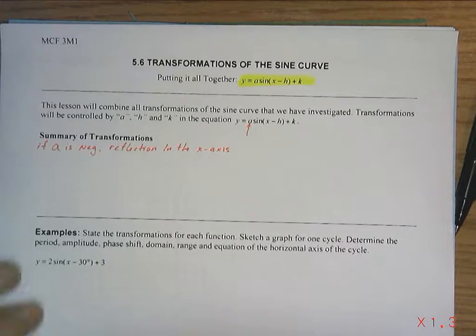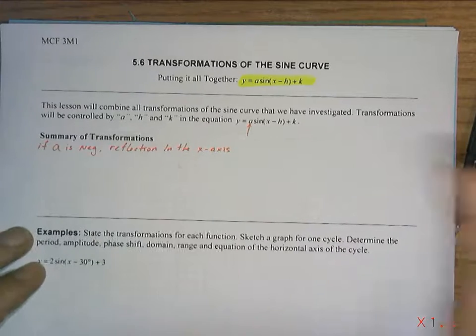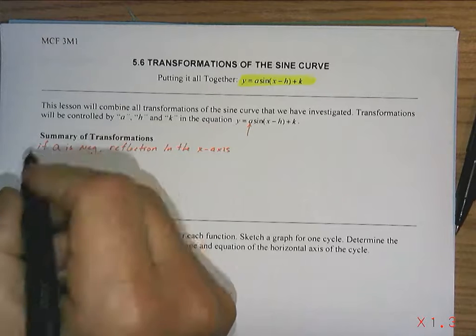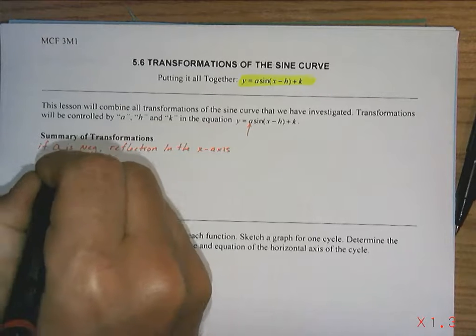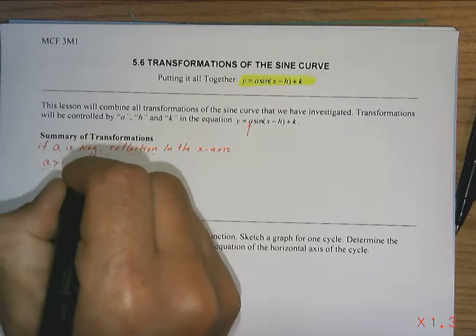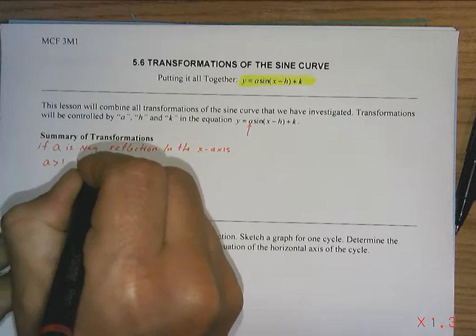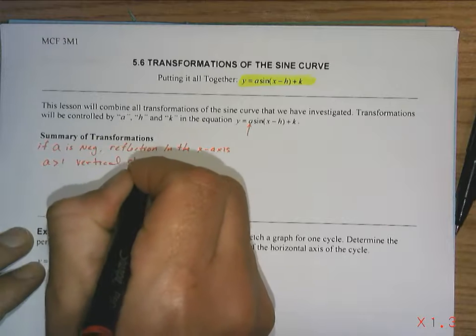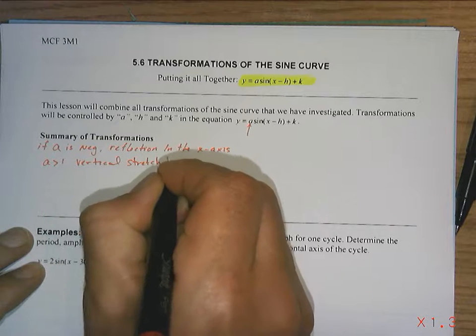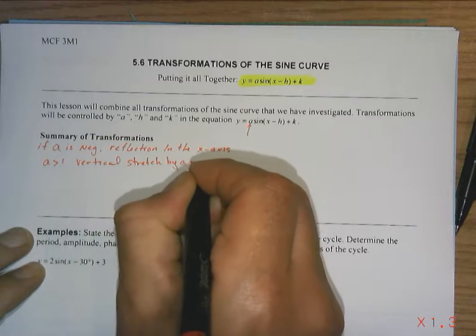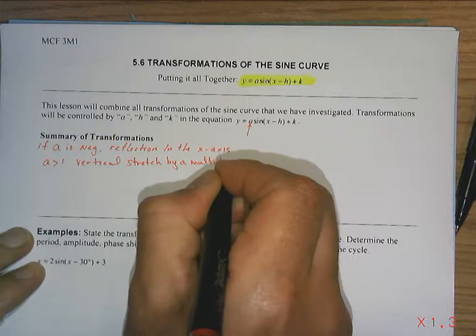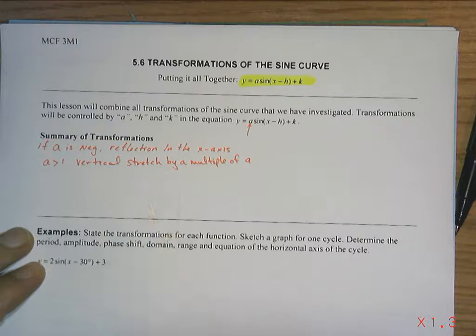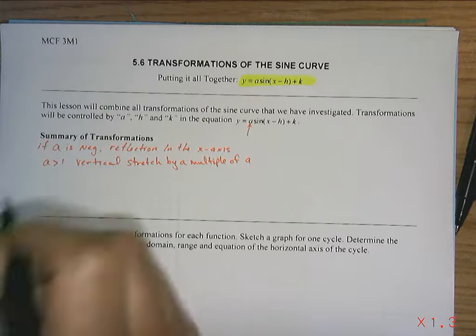So what else happens with a? Well, if a is greater than 1, then you have a vertical stretch by a multiple of a, whatever that value is.